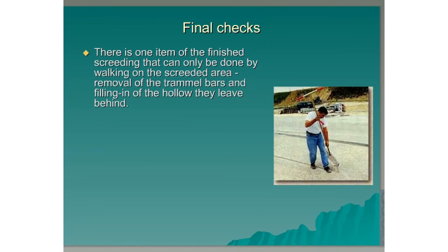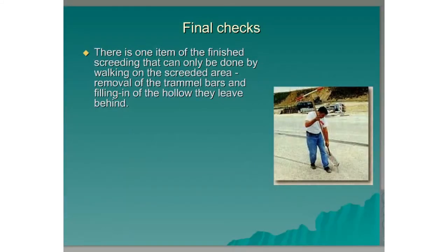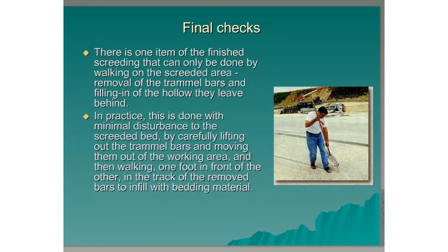Final Checks. There is one item of the finished screeding that can only be done by walking on the screeded area: the removal of the trammel bars and filling in of the hollow they leave behind. In practice, this is done with minimal disturbance to the screeded bed, by carefully lifting out the trammel bars and moving them out of the walking area, and then — as seen in the photograph — walking one foot in front of the other in the track of the removed bars and infilling it with the bedding material.